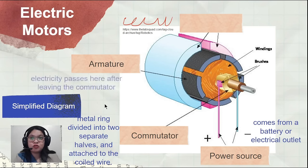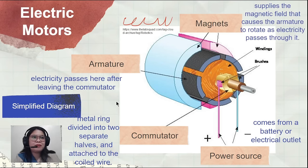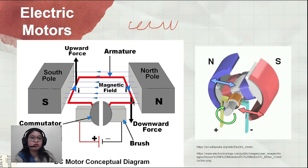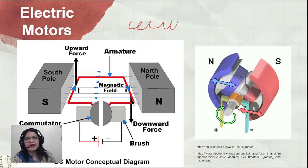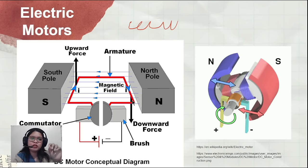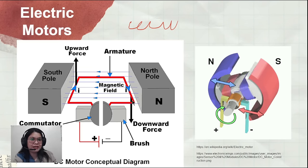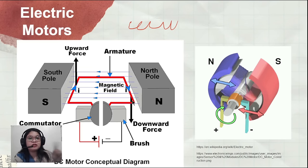We also have the armature — this is where the electricity passes after leaving the commutator. The armature is surrounded by magnets which supply the magnetic field to keep the armature rotating as electricity passes through it. As long as there is electricity being supplied to the appliance, the electric motor will move. For example, with an electric fan, the moment we plug it in and turn it on, electricity rotates the armature, and since the fan blades are connected to it, the blades spin too.